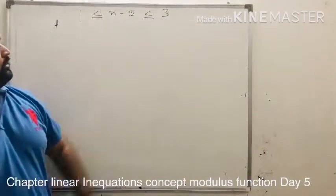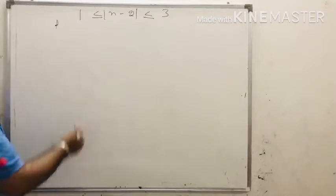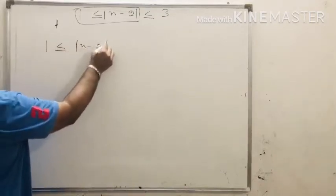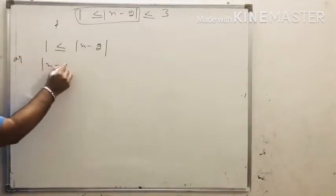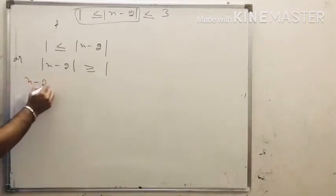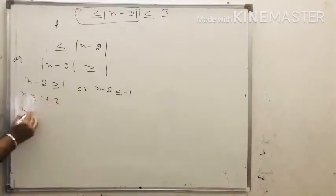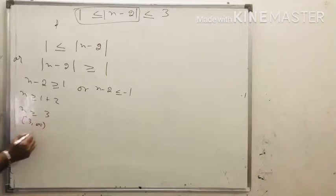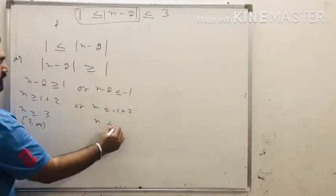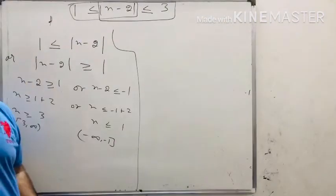This is another form of modulus. We separate this question into two parts. The first part is 1 less than or equals to modulus of x minus 2, or modulus x minus 2 is greater than or equals to 1. When the sign is greater than with the modulus function, either x minus 2 is greater than or equals to 1, or x minus 2 is less than or equals to minus 1. This gives x greater than or equals to 3, so the interval is 3 to infinity, or x less than or equals to 1, giving minus infinity to 1.